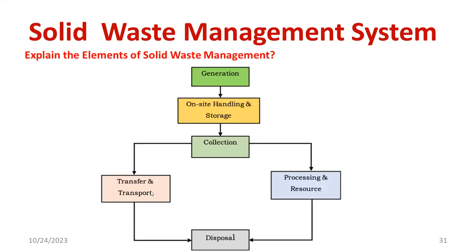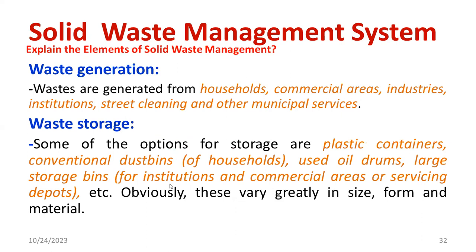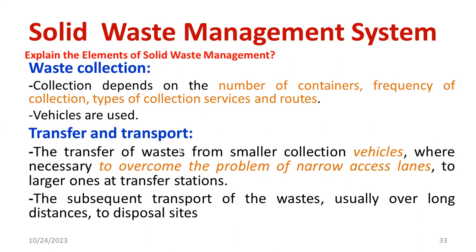Another element is called transfer and transport. The significance of transfer and transport is that transportation is very important. There are two types of vehicles available: one is called a non-compactor vehicle and the other is called a compactor vehicle. Both can be used for transport. The significance of transfer is that it occurs in between waste generation and disposal.